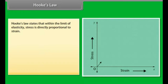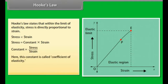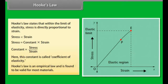Hooke's Law states that within the limit of elasticity, stress is directly proportional to strain. Stress equals a constant multiplied by strain, where the constant equals stress divided by strain. This constant is called the coefficient of elasticity. Hooke's Law is an empirical law and is found to be valid for most materials.